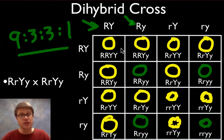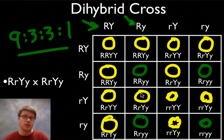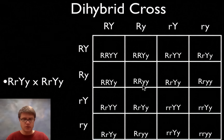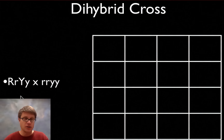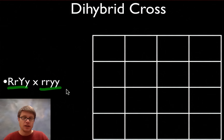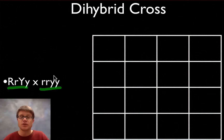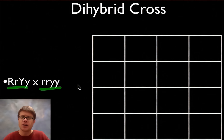It's rare you'll have to draw a full dihybrid cross on a test, but it's important to understand the concept because most traits in your body are controlled by multiple genes — height is probably caused by a dozen different genes. I'll leave you with an example: one parent is big R little r big Y little y, the other is little r little r little y little y. How big does your Punnett square need to be? If you're thinking 4 by 4, you're doing way too much work. Figure out the possible gametes from each parent first.